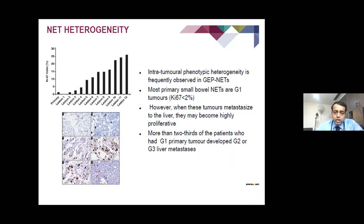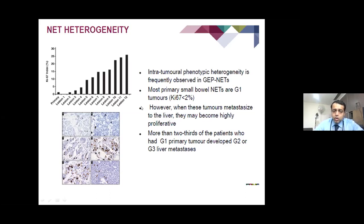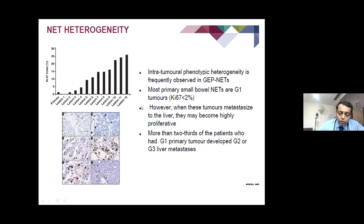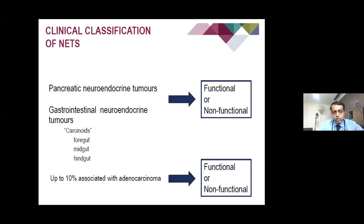Sometimes neuroendocrine tumours can have heterogeneity. As seen in this bar chart, one lesion may be grade 1 while another lesion in the same patient may be grade 3. This heterogeneity can develop over time, especially as you keep treating them. It is therefore important to re-biopsy these patients whenever they are not behaving as expected, because these tumours have the capability to evolve and become more heterogeneous.